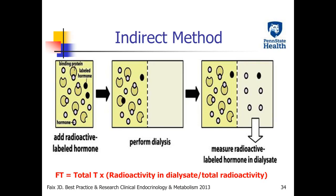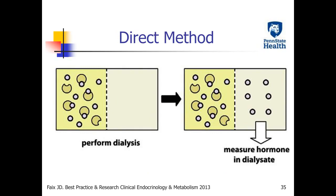You can do indirect or direct equilibrium dialysis to separate free testosterone. For the indirect method, first measure total testosterone in the sample. Then add a certain amount of radio-labeled testosterone to the sample. A part of the radio-labeled testosterone will bind to the binding proteins. After dialysis, measure the total radioactivity and radioactivity in the lysate, respectively. Finally, use this equation to calculate free testosterone.